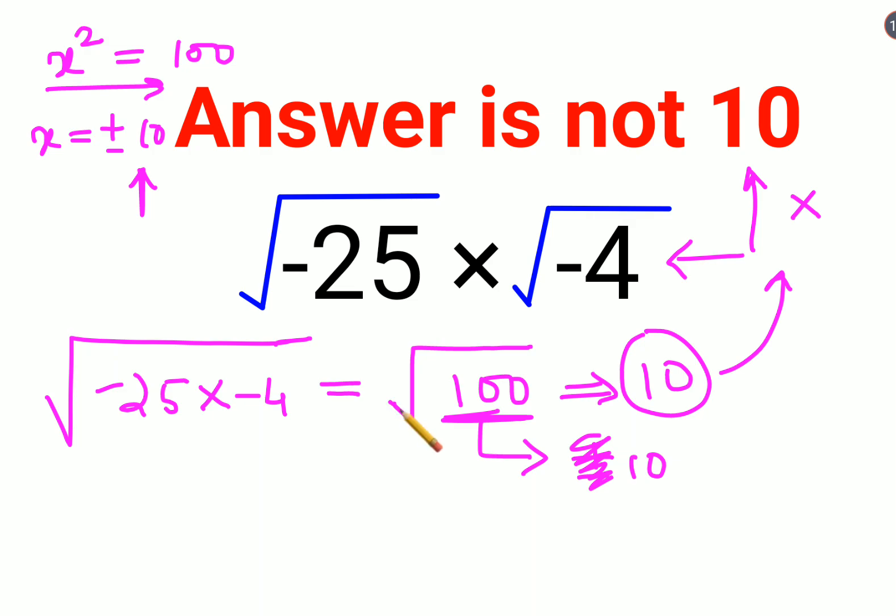Otherwise, root of a positive value will always get you a positive value. This is a basic misunderstanding which a lot of people have in case of roots. Now let's understand how do you do these kind of sums.